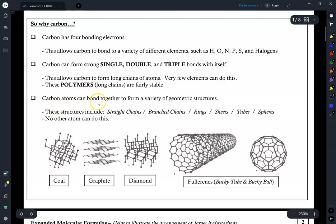Finally, carbon atoms can bond together to form a variety of geometric structures, such as straight chains, branch chains, rings, sheets, tubes, spheres. No other atom can do this, well, at least not to the extent that carbon can.